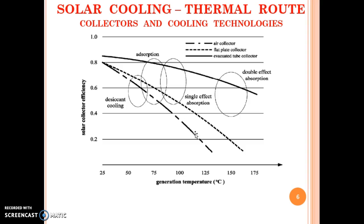So the collector with the lowest efficiency is a solar air heater or air collector, which is suitable only for liquid desiccant cooling. It can be liquid desiccant or can be solid desiccant.